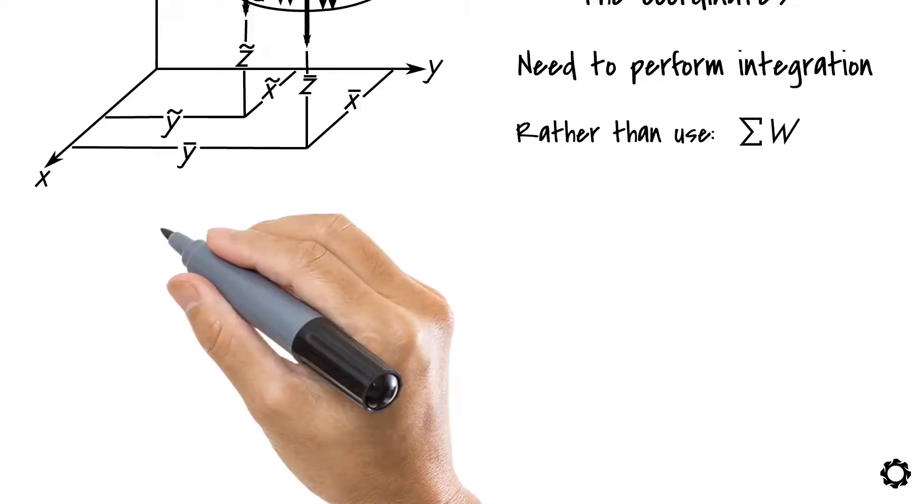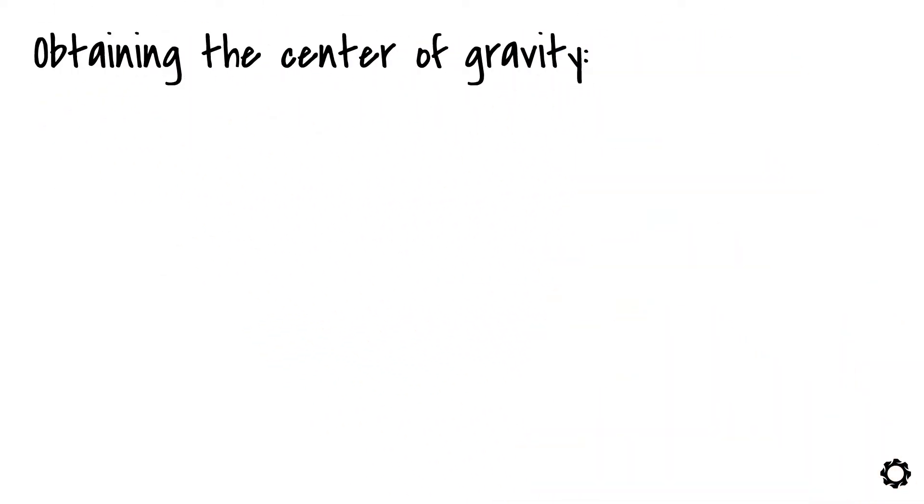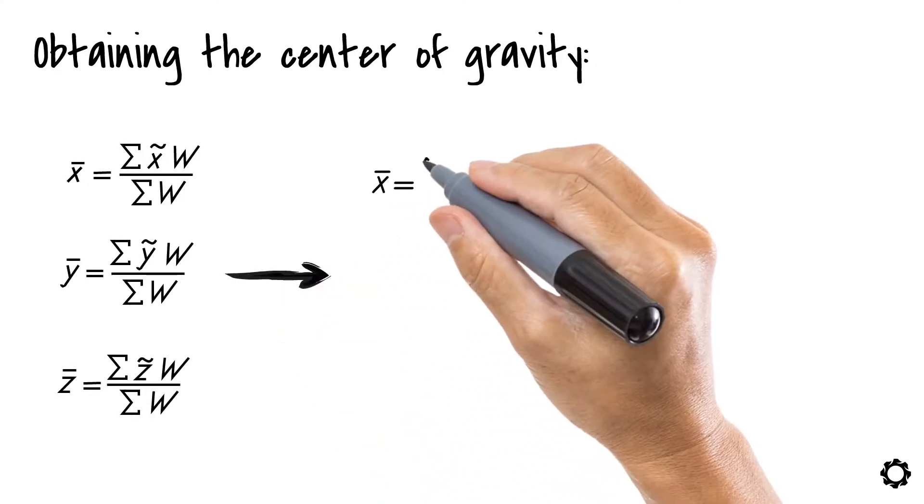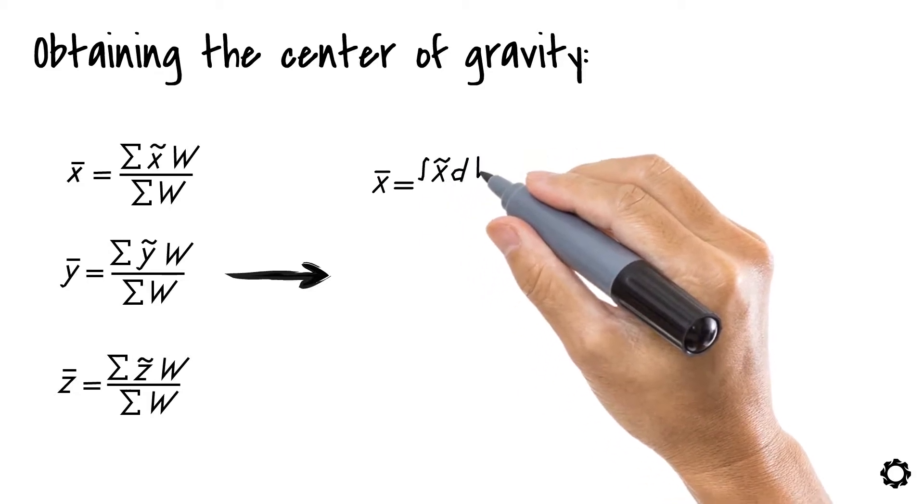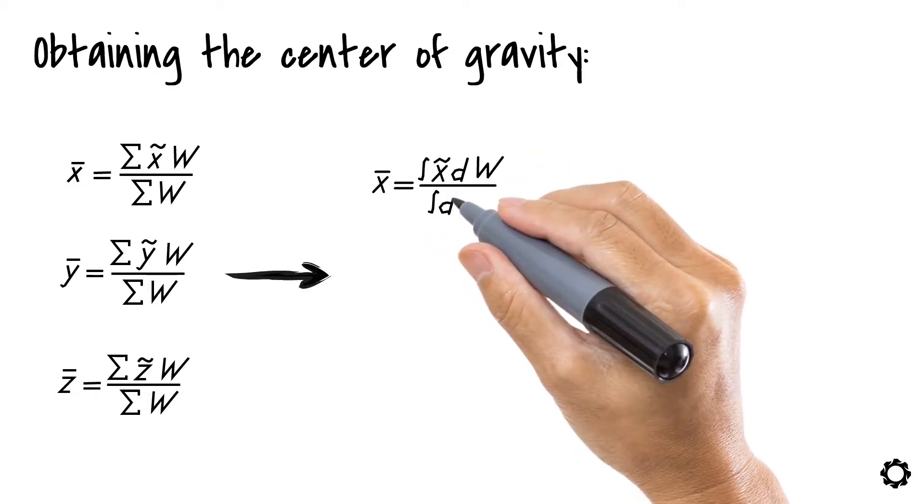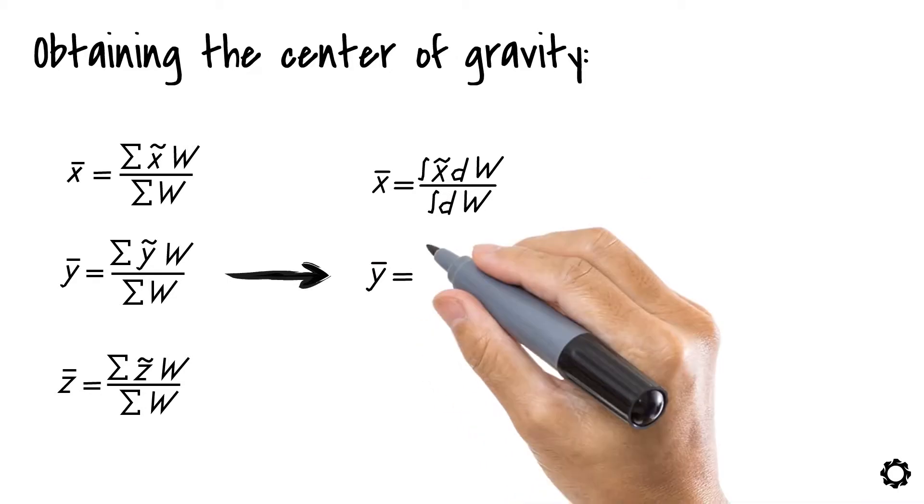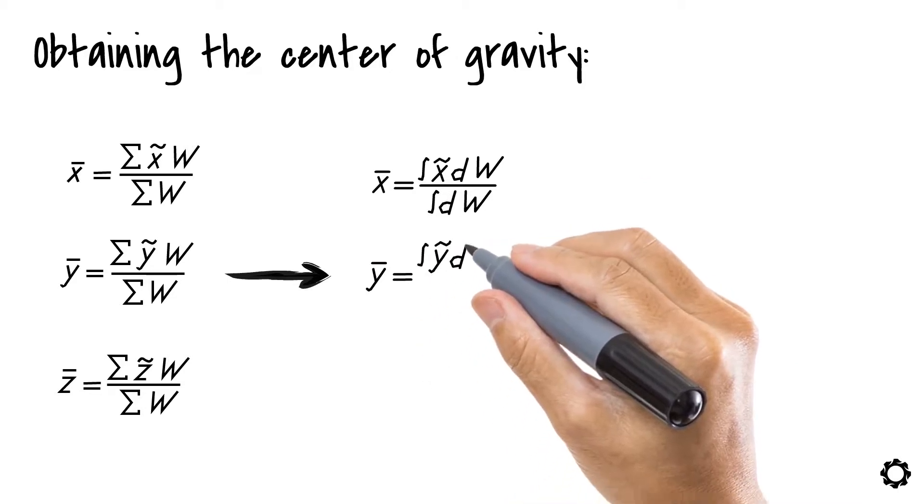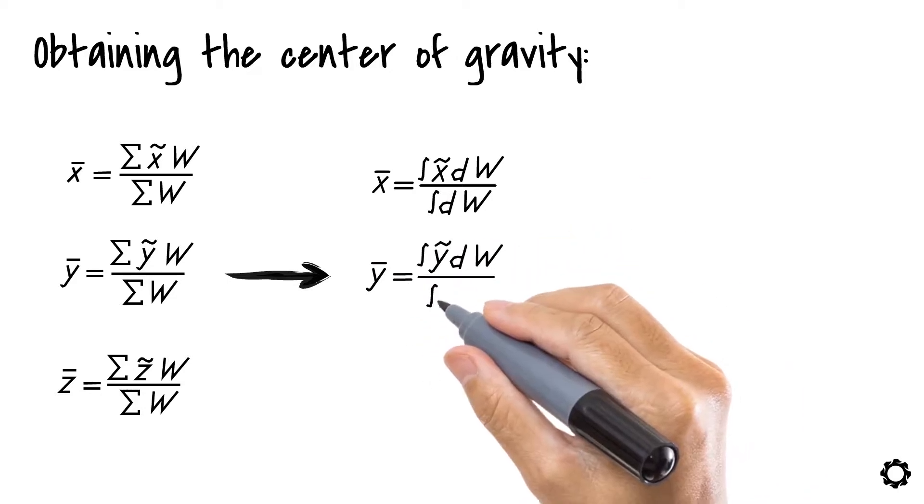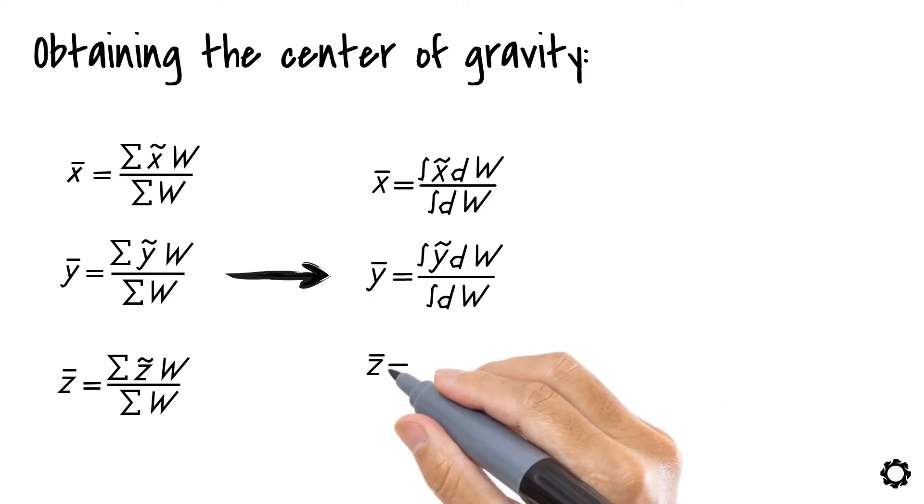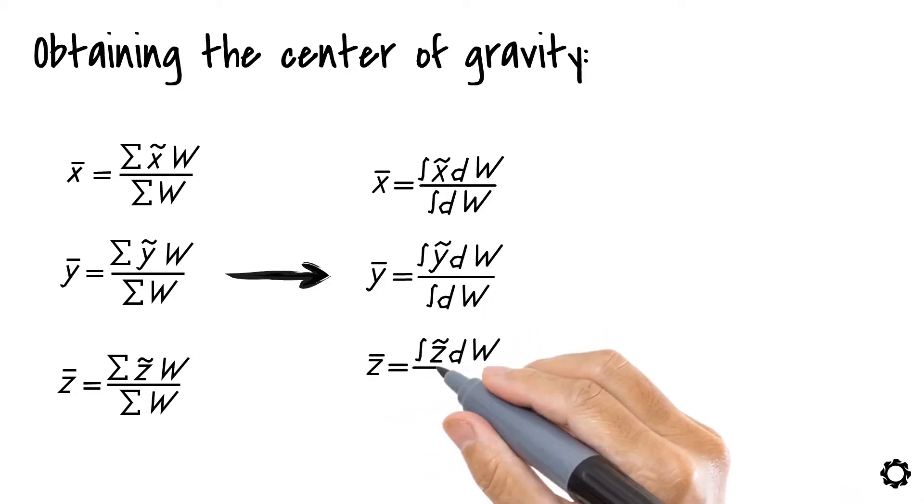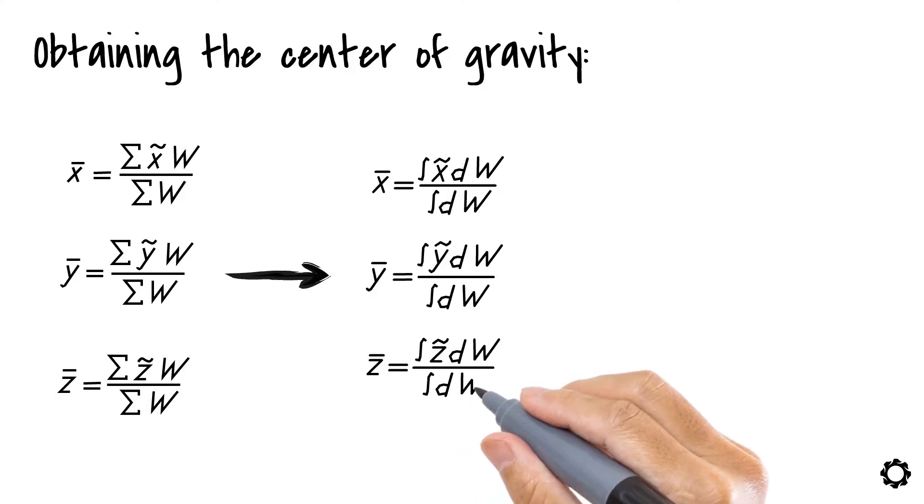Therefore, in the case of obtaining the center of gravity, the equations we defined earlier form into the following equations: x-bar equals integration of x tilde times dw divided by integration of dw, y-bar equals integration of y tilde times dw divided by integration of dw, z-bar equals integration of z tilde times dw divided by integration of dw.